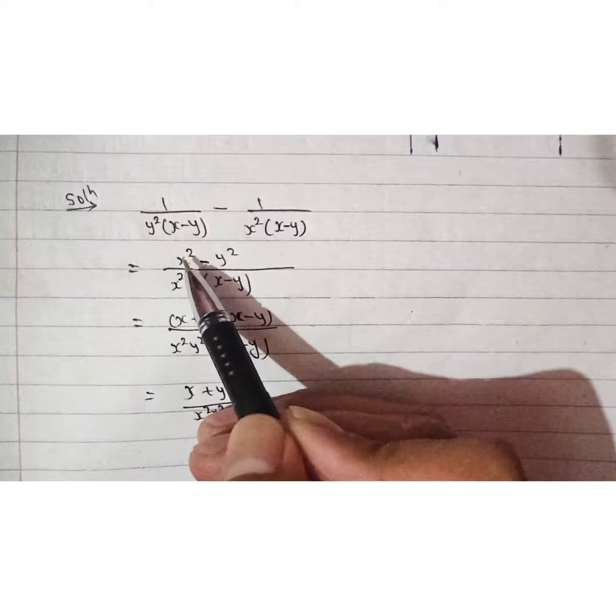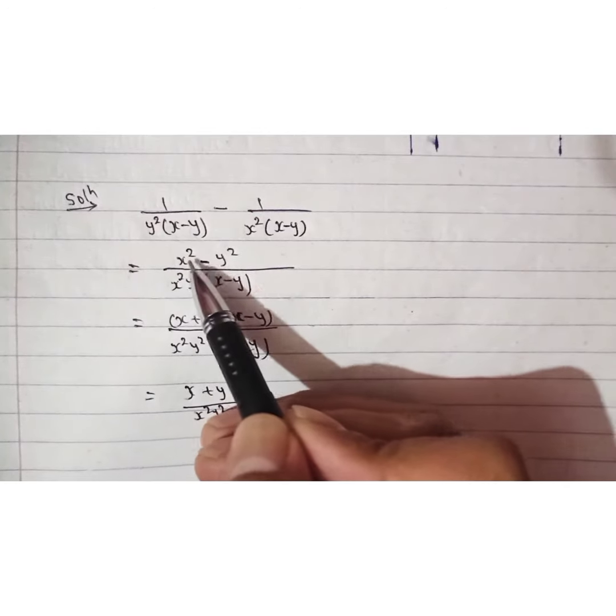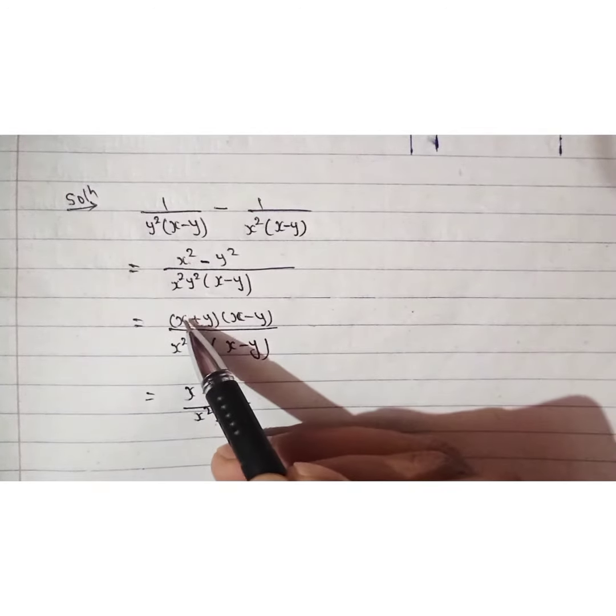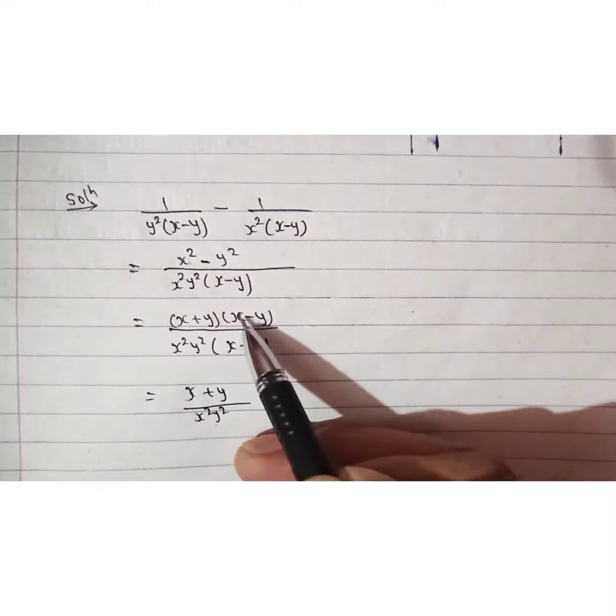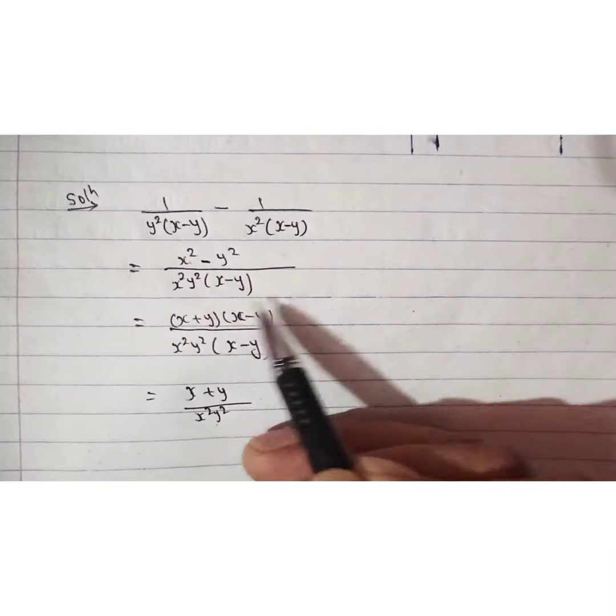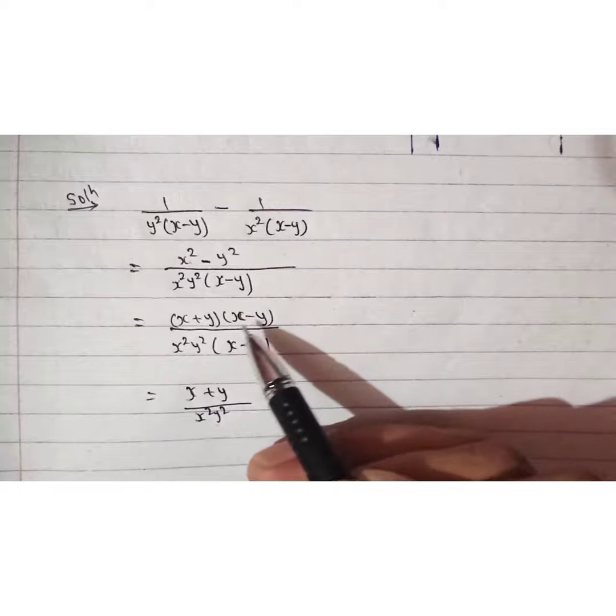Now in the next step, apply the formula a²-b²: x²-y² means (x+y)(x-y). Apply the formula a²-b² = (a+b)(a-b) in the similar way.